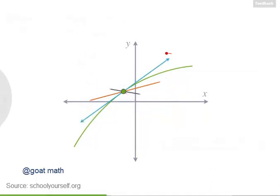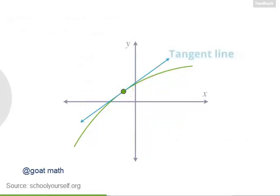Exactly, so this line has the same slope as the curve at this point. This line is an example of a tangent line, and we would say that this line is tangent to this function at this point.